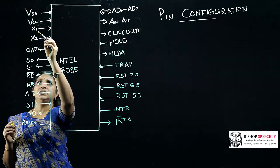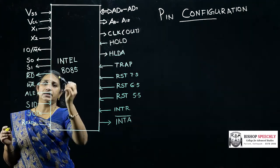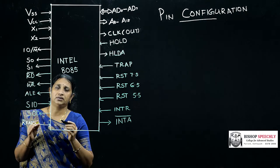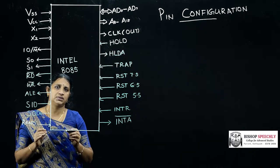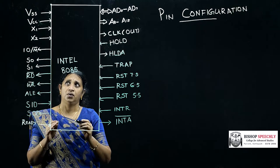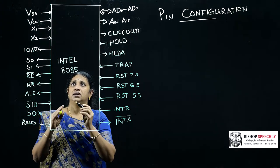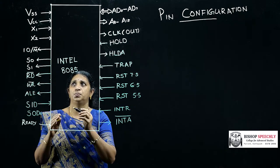The next pins X1 and X2 are connected to an external crystal oscillator for generating clock signals. The entire operation of the microprocessor is on the basis of clock signals. So for generating the clock signals the X1 and X2 pins are used.